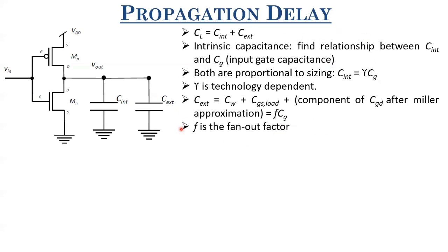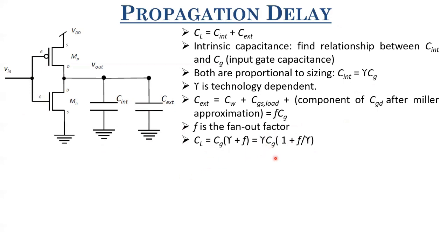With this notation, where we have related both C_int and C_x to the input gate capacitance of the inverter, we can relate CL to CG. CL = C_int + C_x = γ·CG + F·CG = γ·CG·(1 + F/γ). So CL can be written as γ·CG·(1 + F/γ). Since γ·CG is C_int, it can also be written as C_int·(1 + C_x/C_int). This makes our life pretty simple, as we shall see.